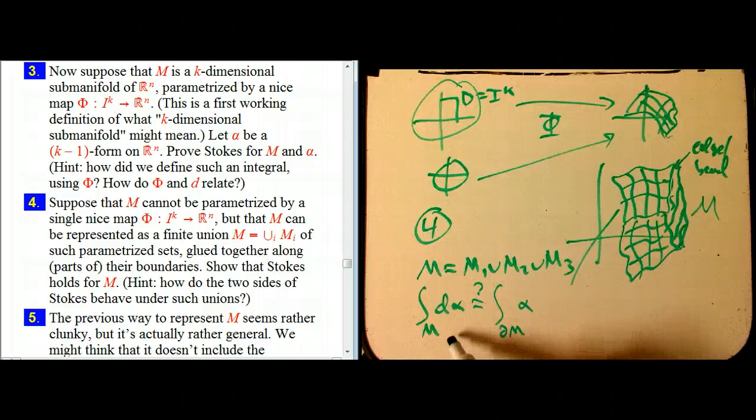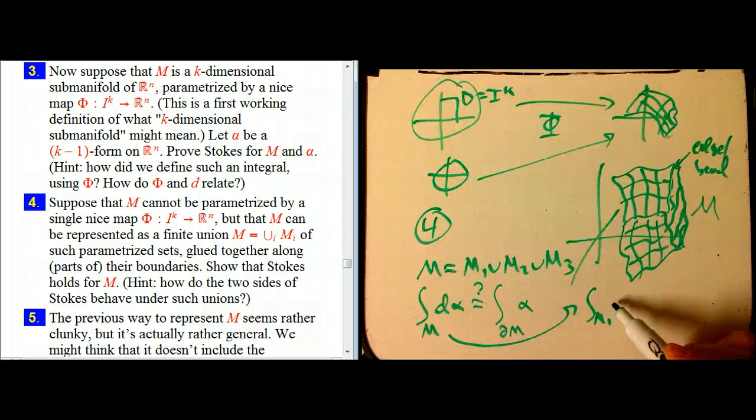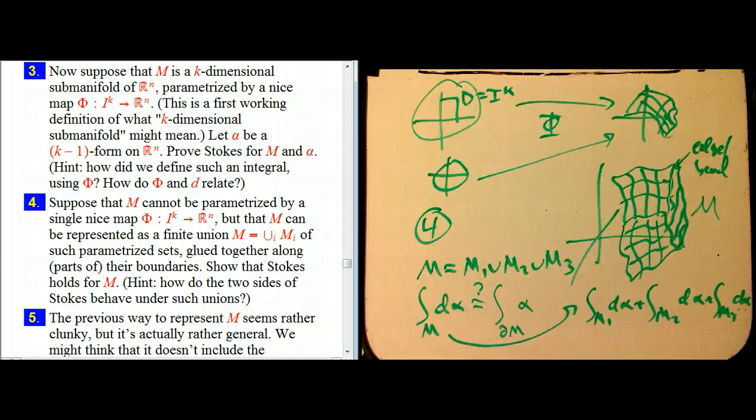Well, let's just look at how this works on the unions. So the integral over M, that's just going to be the integral over M1 of D alpha, plus the integral over M2 of D alpha, plus the integral over M3 of D alpha. On each of those, Stokes' theorem is going to work. So that's going to be the integral over boundary M1 of alpha, plus the integral over boundary M2 of alpha, plus the integral over boundary M3 of alpha.